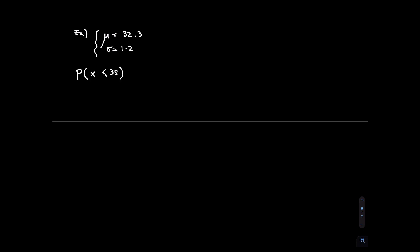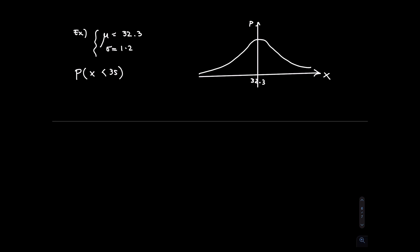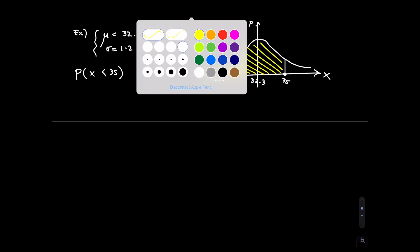The question asks: find the probability that the volume of soda in a randomly selected bottle will be less than 35 ounces — so P(X < 35). Let me draw this. The horizontal axis is x, the vertical axis is p. The average is 32.3, so 35 will be to its right. The question is asking me to find that yellow area to the left of 35.